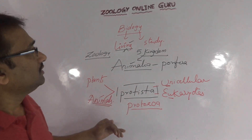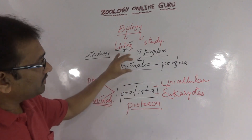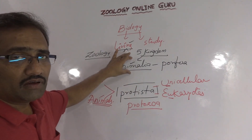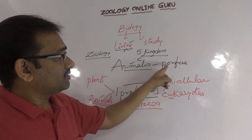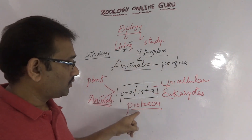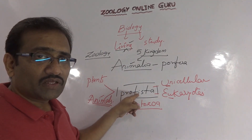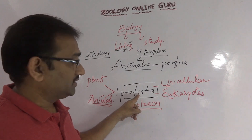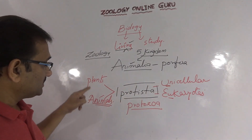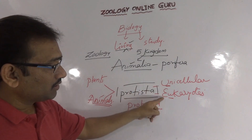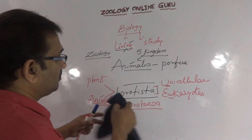So our topic, concerned in the MSc entrance coaching, is starting with Protozoa — but this Protozoa is not included in the Animalia kingdom in Whittaker's five kingdom classification. Animalia starts with the phylum Porifera, whereas our topic Protozoa, which we are starting today, is included in Protista, one of the kingdoms in Whittaker's classification. So our topic is Protozoa.